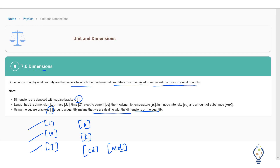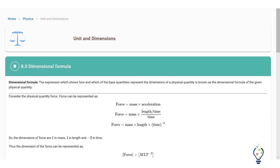Let us move to dimension formula. The expression which shows how and which of the base quantities represent the dimension of a physical quantity is known as the dimension formula of the given physical quantity.